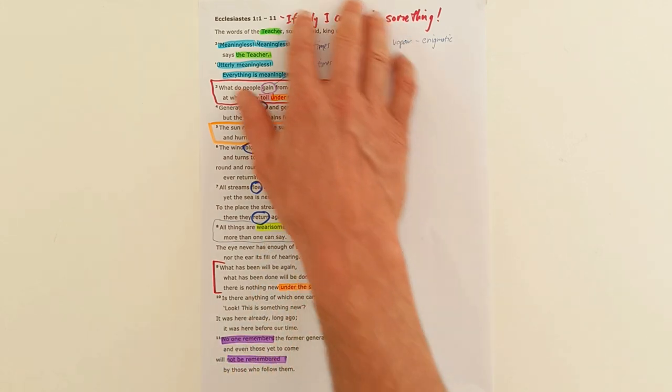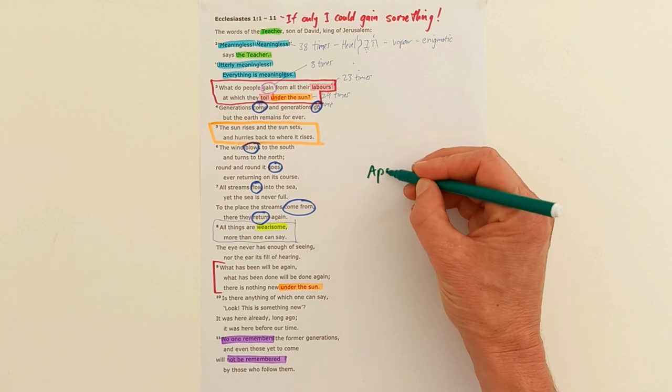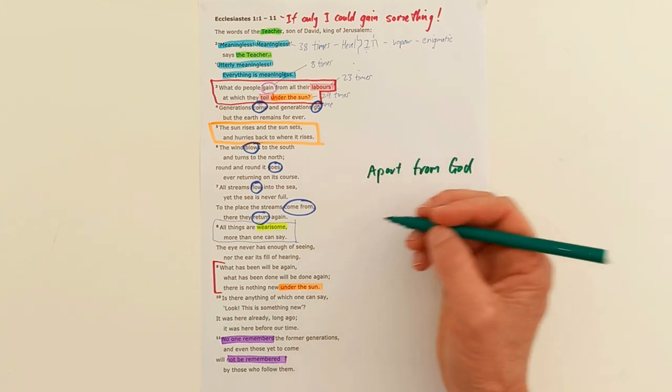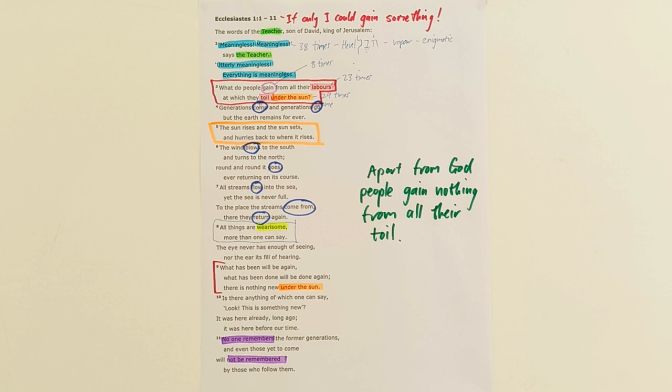In this opening section, God is conspicuous by his absence. The big thing that Mr. Teacher wants us to see is that apart from God, people gain nothing from all their toil. That's the heart of these opening eleven verses. It's all meaningless, it's enigmatic. He can't make sense of why do we work so hard? Everybody is just working so hard, the world of his day was much like the world of our day. People are just in the rat race working hard, and he's just saying, but what do you gain? What's the point? In the end you die, and nobody even remembers you.